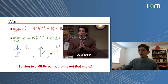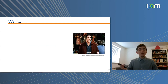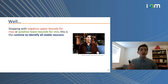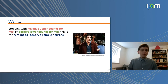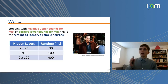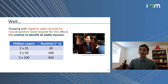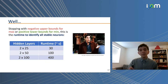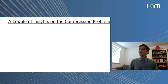We know that, but we tried it anyway in our first paper. What we did was: if we found a negative upper bound for the maximization problem, or a positive lower bound for the minimization problem, we would stop early. The runtime to identify stable neurons for MNIST classifiers was: about 30 seconds for two hidden layers of 25 neurons each, and 400 seconds for two hidden layers of 100 neurons each. This actually takes more time than training the neural network — which is not great — and that's why we needed to scale this up.